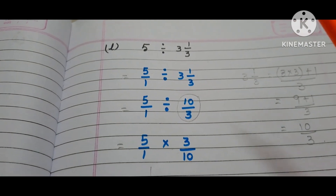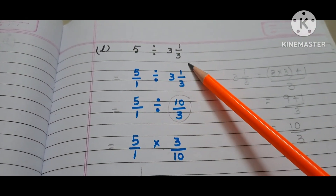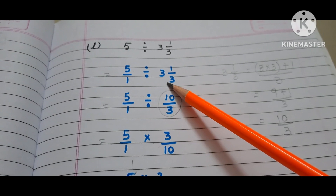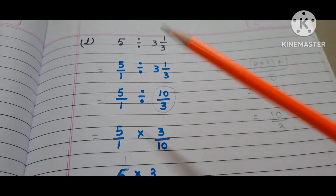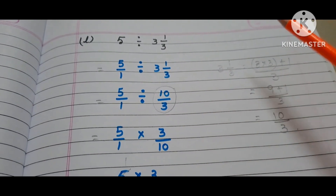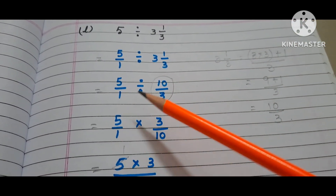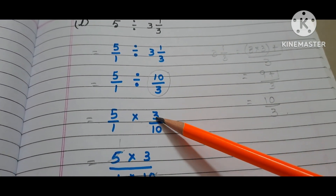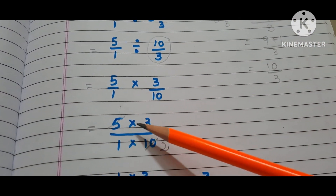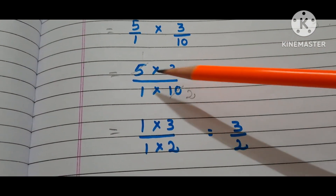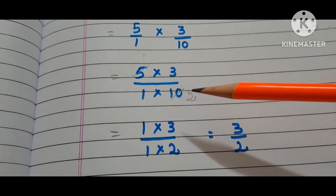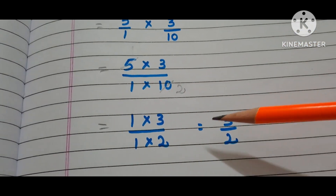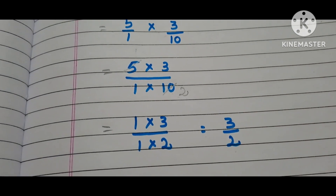Now let us move to the L bit. The question is 5 divided by 3⅓. 5 means 5/1 divided by 3⅓. Here, 3⅓ is a mixed fraction. Convert it into an improper fraction: it becomes 10/3. Now, copy down the first fraction 5/1. Write the multiplication symbol instead of the division symbol and take the reciprocal of 10/3, that is 3/10. We have 5 times 3 by 1 times 10. Here we can reduce 5 and 10: 5 times 1 is 5, 5 times 2 is 10. Now we have 1 times 3 by 1 times 2, that is 3/2. The answer is 3/2.